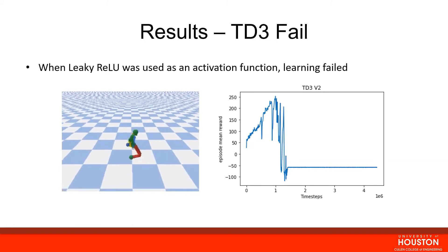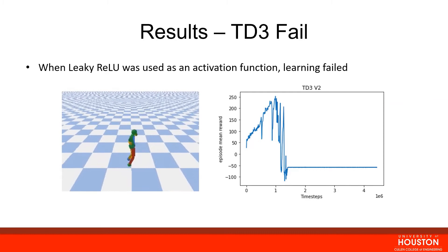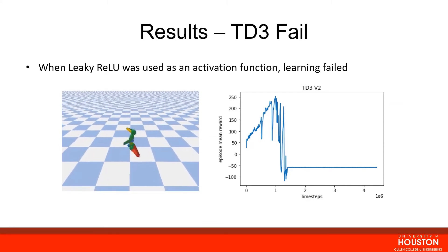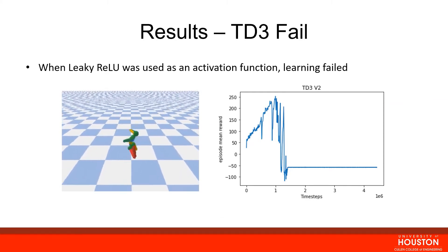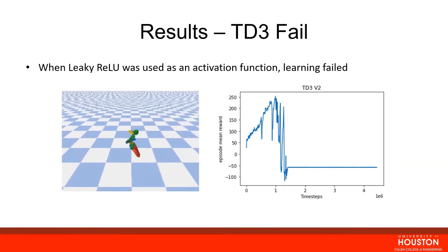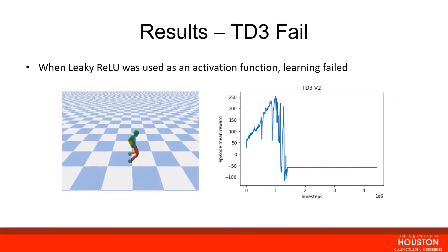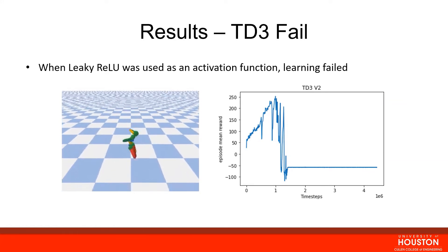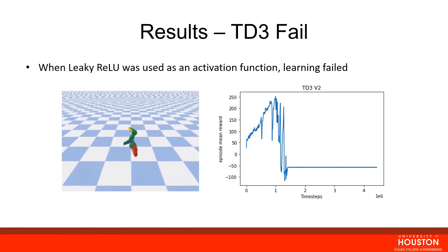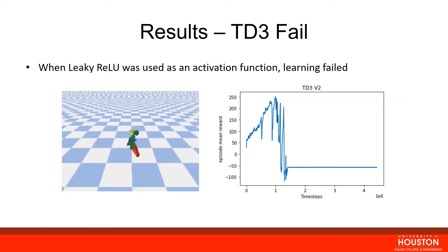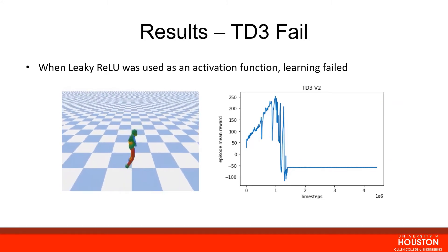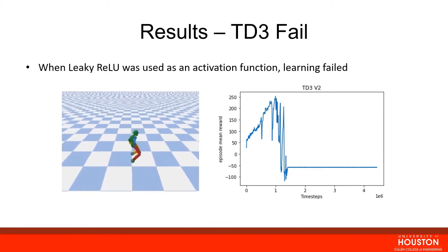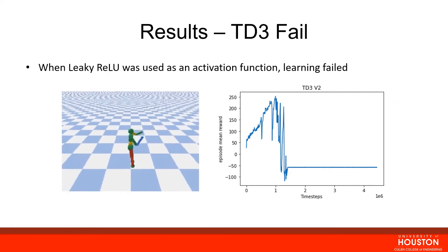Moving on to TD3, we had one instance in which the robot failed to learn to walk forward, ending up jumping in place. This occurred when the leaky relu activation function was used instead of relu. This is reflected in the mean reward plot — at around 1.5 million time steps, the mean reward stops and drops to around negative 50, which is where the robot agent started jumping in place.